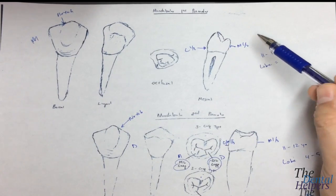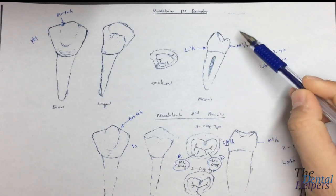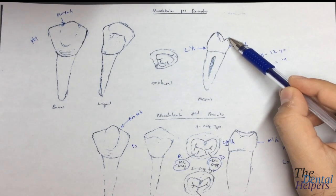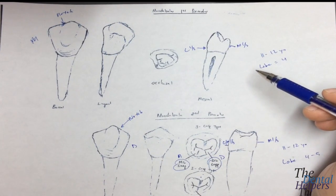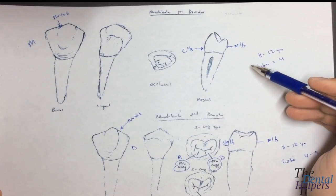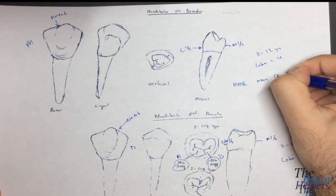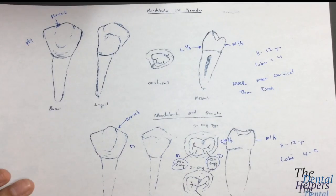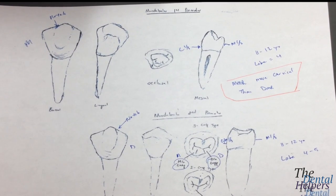Unlike the maxillary premolars, the lingual cusp is significantly shorter. Looking at the mandibular first, the lingual cusp is not very apparent — it's very short compared to the buccal cusp. Another big thing to remember about the mandibular first is that the mesial marginal ridge is more cervical than the distal marginal ridge.